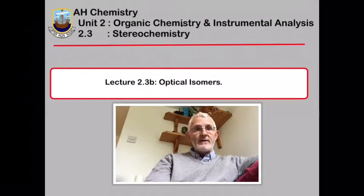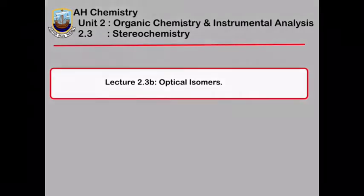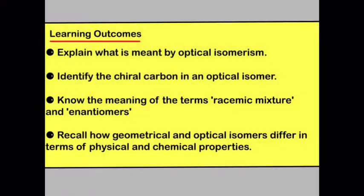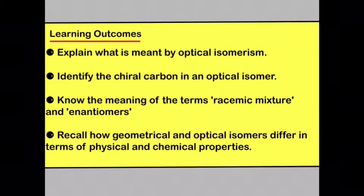In this lecture, we're going to consider optical isomers. By the end of this lecture, you should be able to explain what is meant by optical isomerism, identify the chiral carbon in an optical isomer, know the meaning of the terms racemic mixture and enantiomers, and recall how geometrical and optical isomers differ in terms of physical and chemical properties.